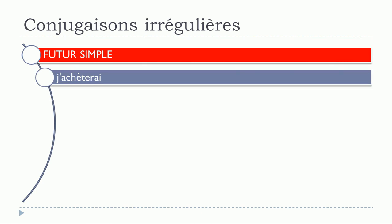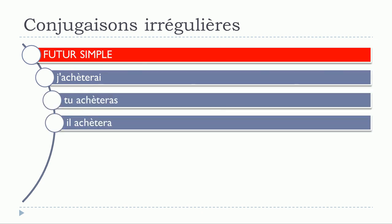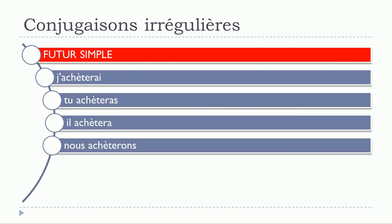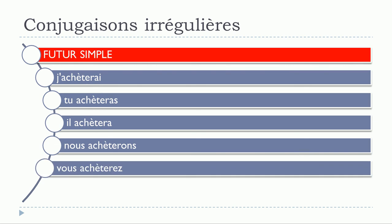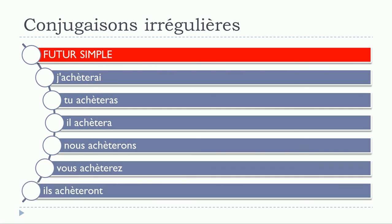For the Futur Simple: j'achèterai, tu achèteras, il achètera, nous achèterons, vous achèterez, ils achèteront. Here you can see that all the forms are affected and modified. It's the same rule — you put the accent grave and change the pronunciation accordingly.